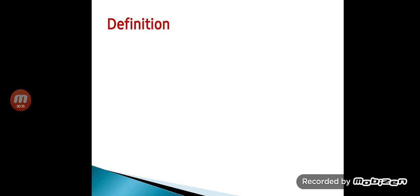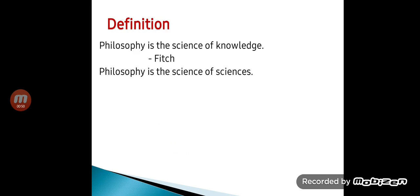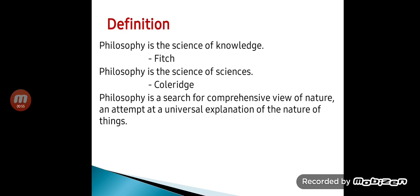Now let's see the definitions of philosophy. The first definition is philosophy is a science of knowledge, given by Fitch. The next definition is it is a science of all sciences, given by Coleridge. The next definition says philosophy is a search for a comprehensive view of nature and an attempt at a universal explanation of the nature of things, given by Alfred Weber.